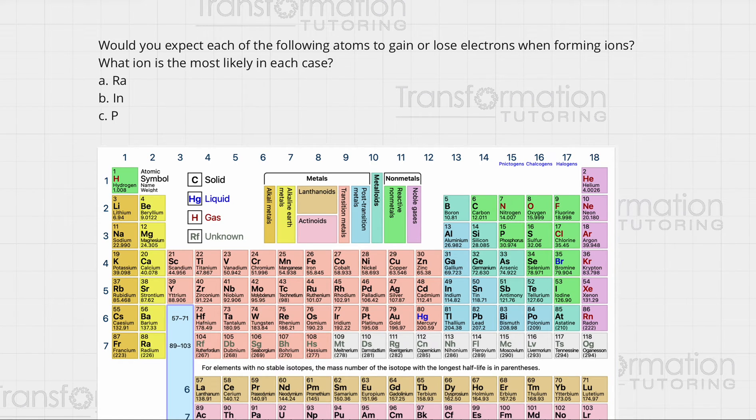Would you expect each of the following atoms to gain or lose electrons when forming ions? What ion is the most likely in each case? We have radium, indium, and phosphorus to work with.